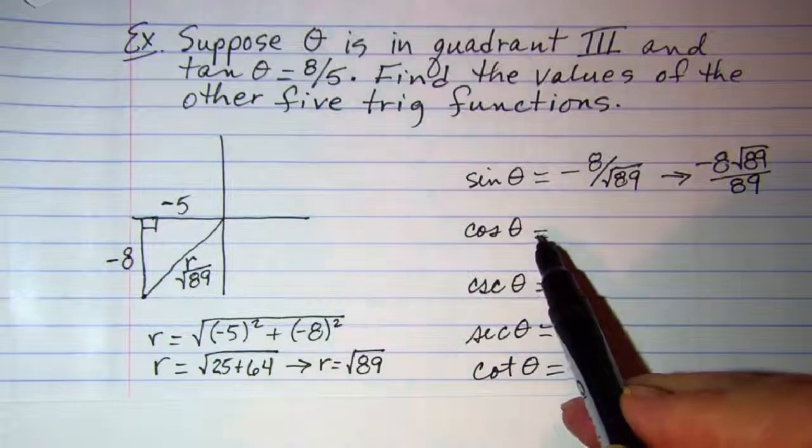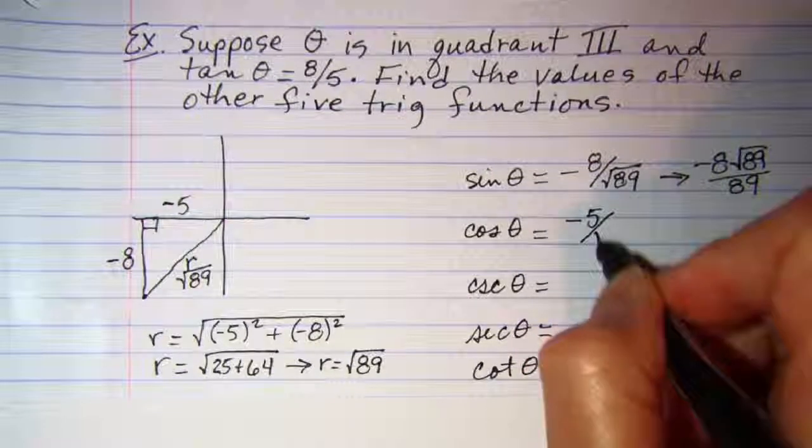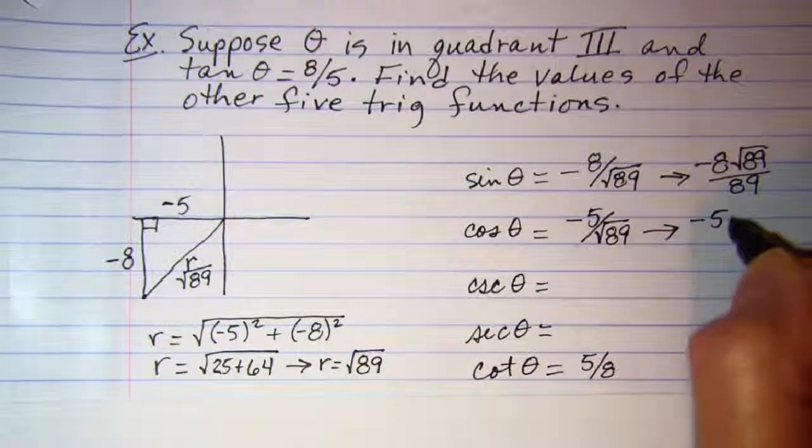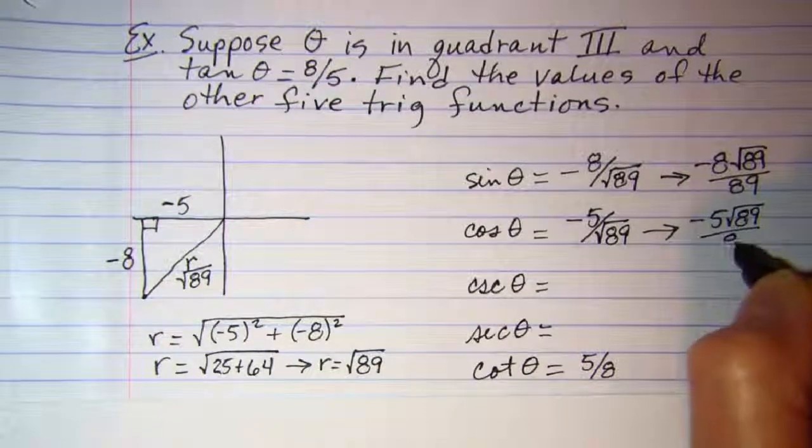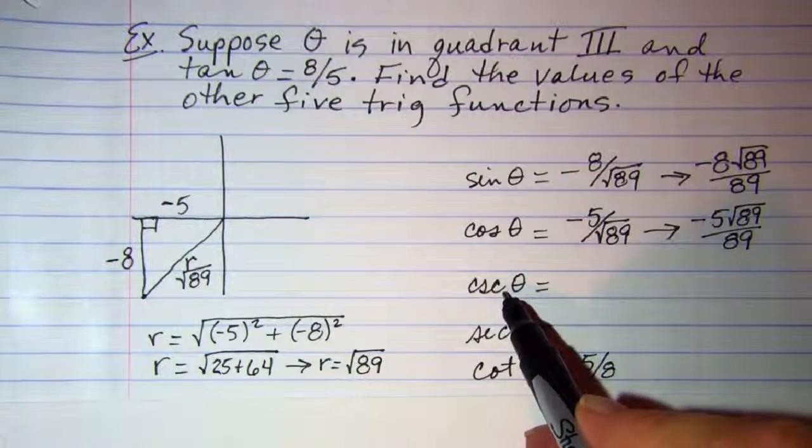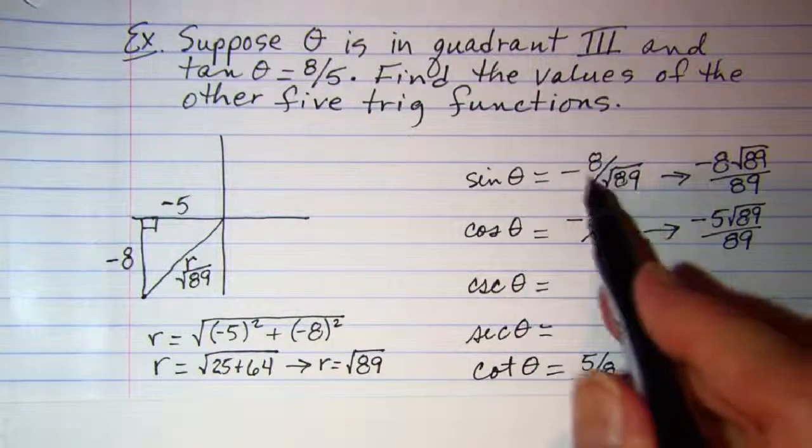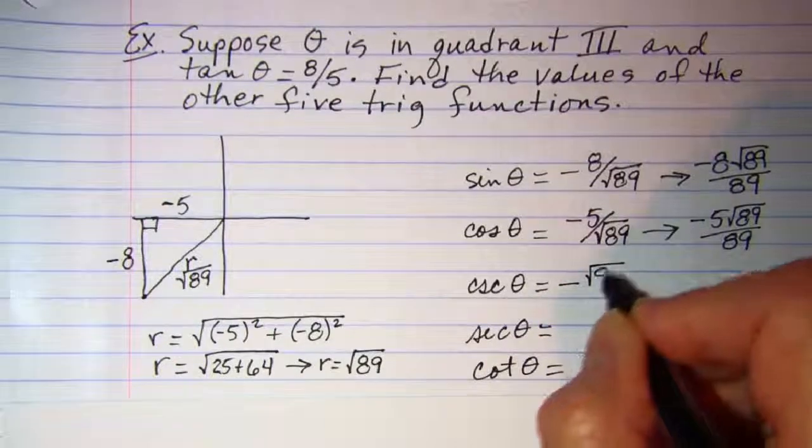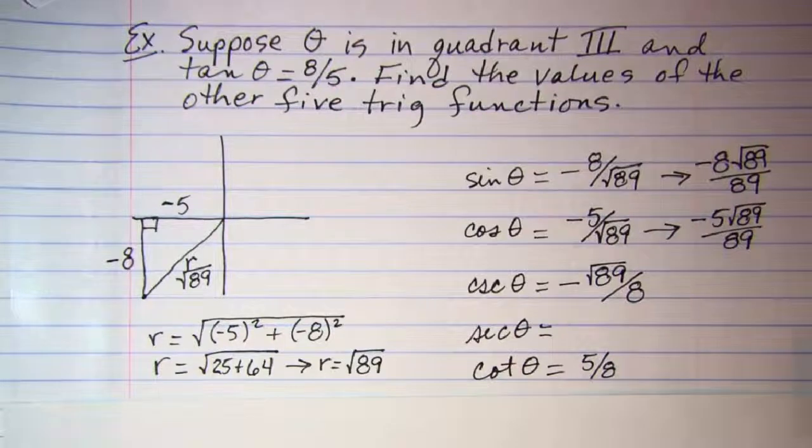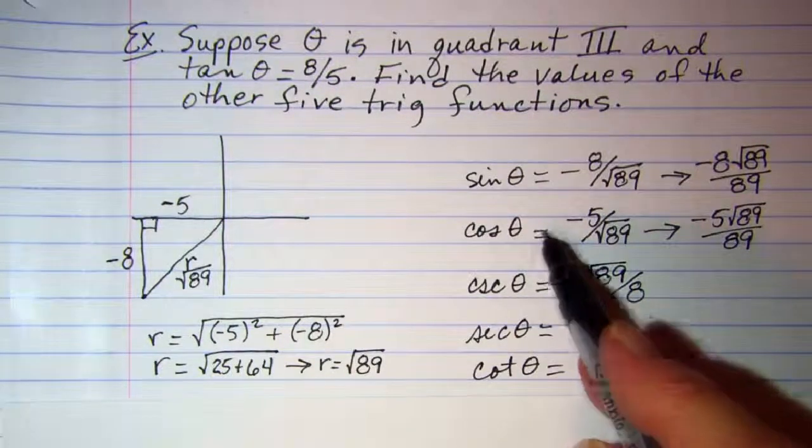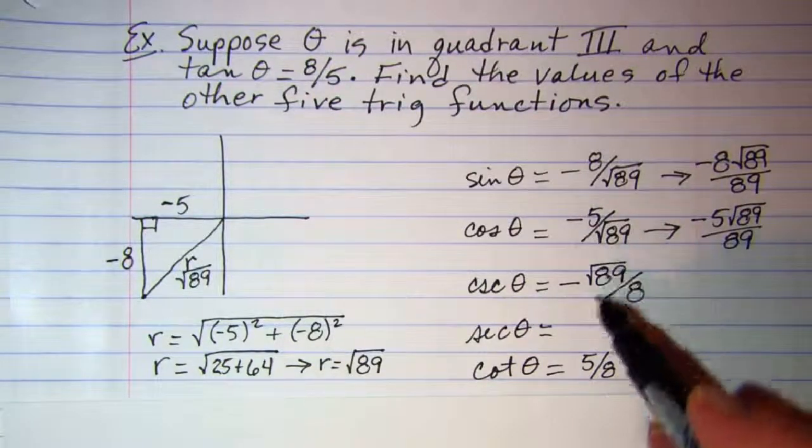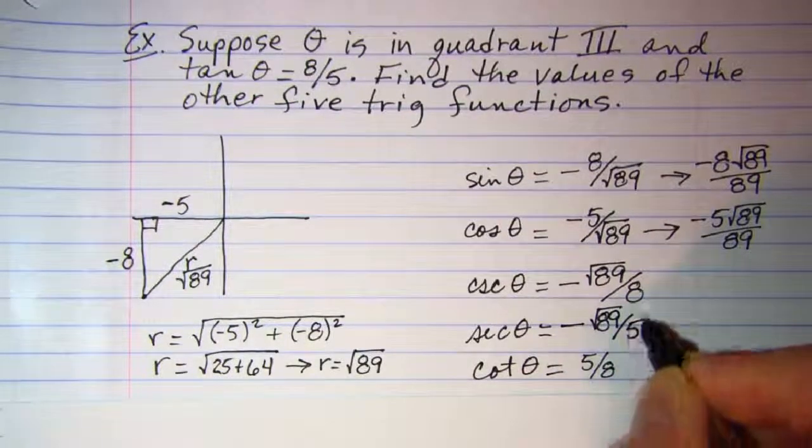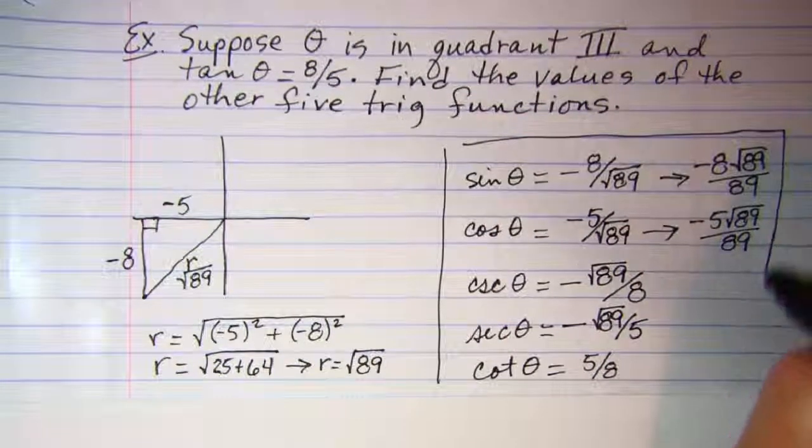Our cosine is defined as x over r, so negative 5 over root 89. When we rationalize that, it becomes negative 5 root 89 over 89. Cosecant is the reciprocal of sine, so I just need to do the reciprocal of this ratio. So my cosecant is negative root 89 over 8, and my secant is the reciprocal of cosine, so just the reciprocal of this ratio. My secant then is negative root 89 over 5. So there's my five trig functions.